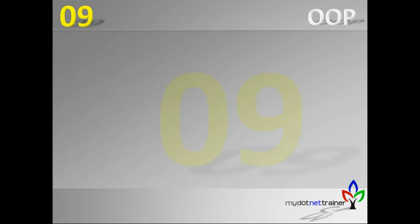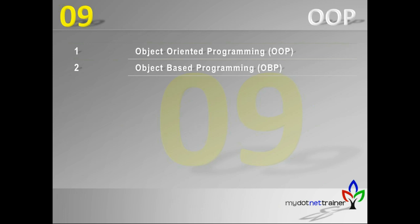We are in session 9, covering the core programming model called object-oriented programming. We'll see all the key terminologies, their implications, and how they relate to the real world — drilling down into OOP especially for C#.NET and VB.NET. We'll also look at object-based programming, the difference between OOP and OBP, and touch base on aspect-oriented programming (AOP) at the end.